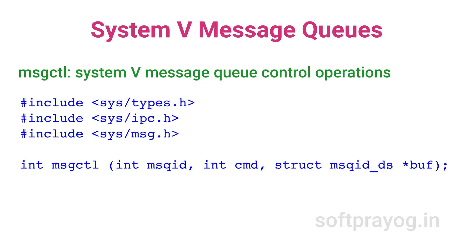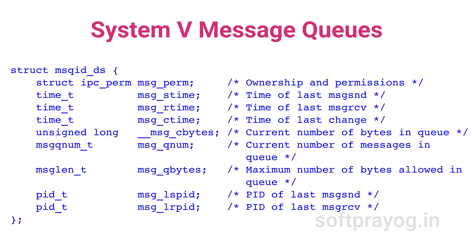The msgctl call is for control operations on a message queue. msqid is the message queue ID. The next argument is the integer command, which can be one of IPC_RMID, IPC_STAT, and IPC_SET. When the command is IPC_RMID, the message queue is removed. The command IPC_STAT gives the status of the message queue in a structure pointed to by buf. For each message queue, the kernel maintains a data structure msqid_ds.